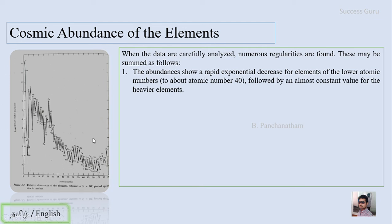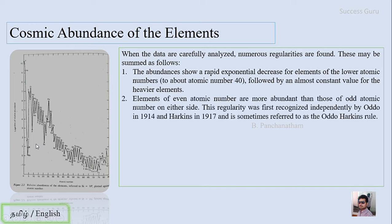The second observation is that elements with even atomic numbers have higher abundance than those with odd atomic numbers — for example, helium, carbon, oxygen, and iron. This is the Oddo-Harkins rule, contributed by Oddo and Harkins.